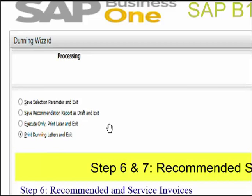The last option — print Dunning letter and exit — executes everything from the previous steps and prints the Dunning letter. You can then send the printed Dunning letters by email, fax, or drop them in the customer's mailbox to remind them of their unpaid amounts.